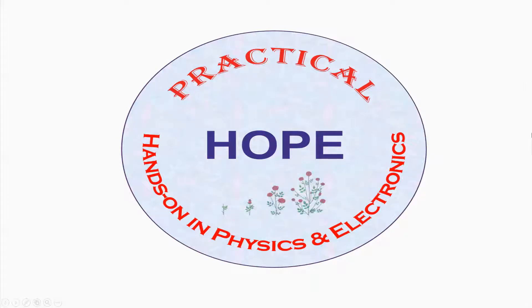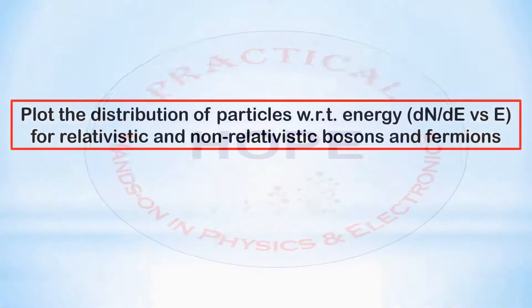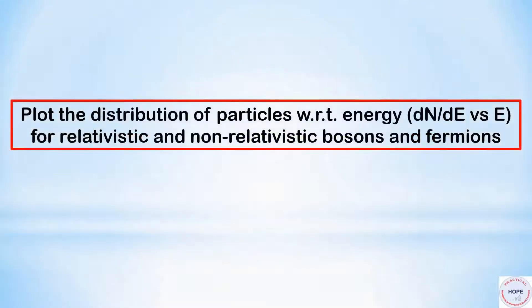Hello and welcome to the next video of our channel, Practical Hope. In this video, we are going to plot the distribution of particles with respect to energy, i.e., dN by dE versus E for relativistic and non-relativistic bosons and fermions.